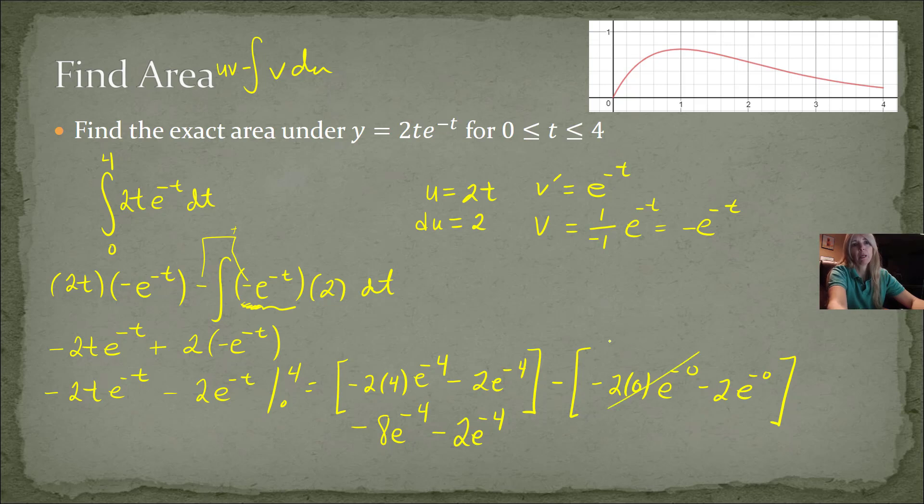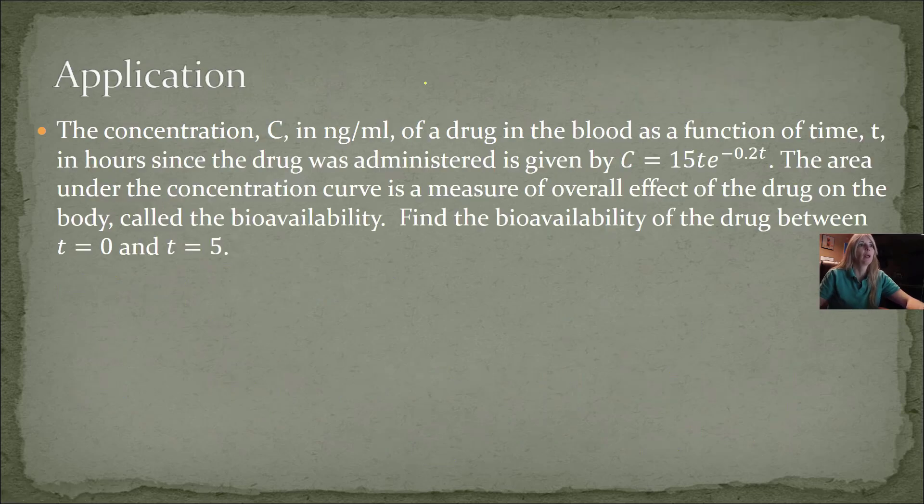This piece becomes 0, right? And then a negative and a negative makes this positive. And then anything to the 0 powers 1, so that would be plus 2. And these are actually like terms, so I could combine them as negative 10e to the negative 4 plus 2. And that would be my final answer. So you see we're doing the same thing with actually finding area.